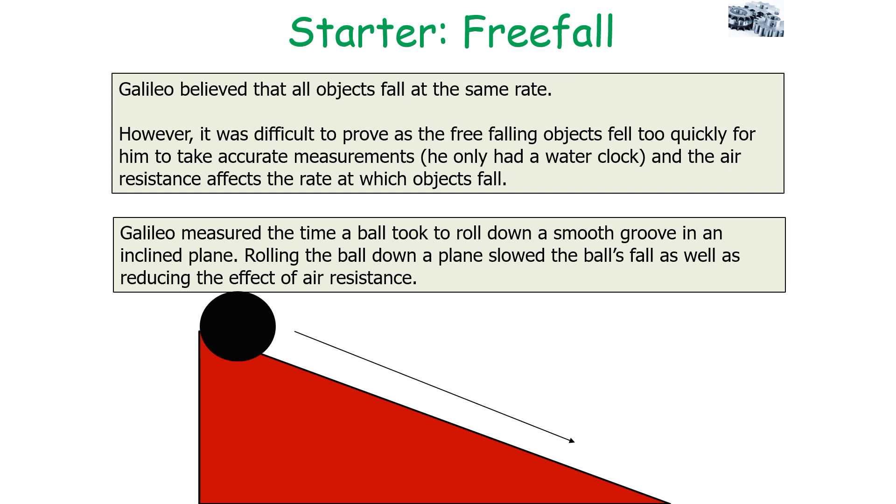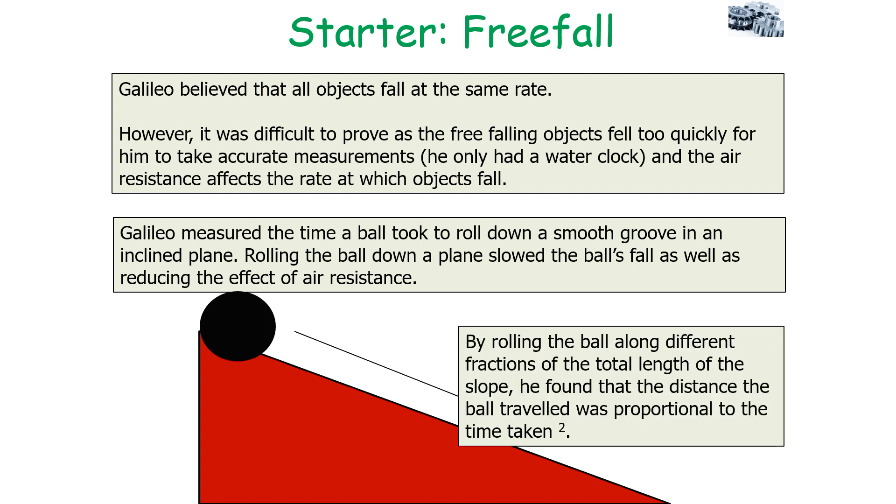Galileo measured the time a ball took to roll down a smooth groove in an inclined plane. Rolling the ball down a plane slowed the ball's fall as well as reducing the effect of air resistance. The ball accelerated down the slope, and by rolling the ball along different fractions of the total length of the slope, Galileo found that the distance the ball traveled was proportional to the time taken squared.